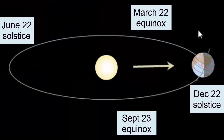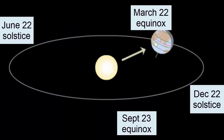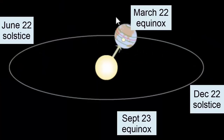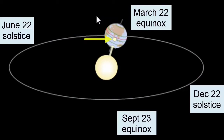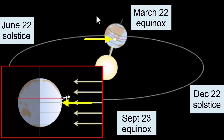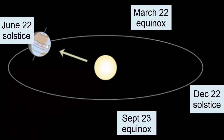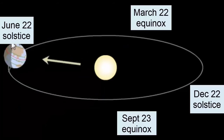As we watch the Earth continue its orbit, the Earth's tilt again moves towards the Sun, such that when we reach the March 22nd equinox, we once again have all parts of the planet receiving equal amounts of sunlight and darkness. The equator once again receives the direct sunlight. At high noon, the Sun would be directly overhead here.